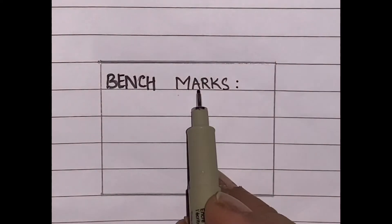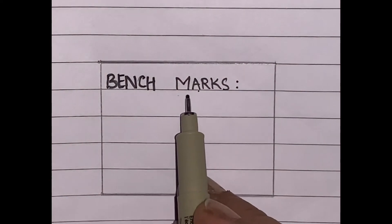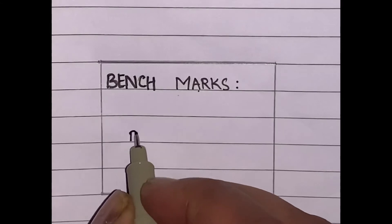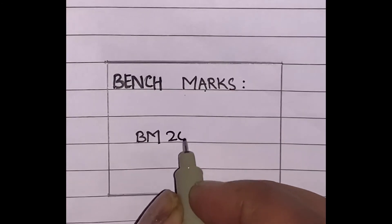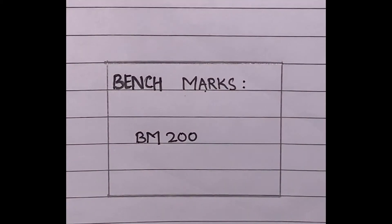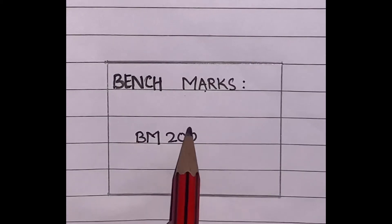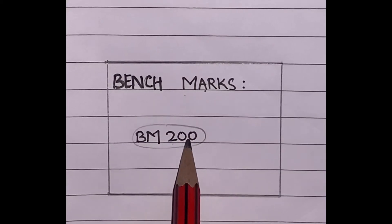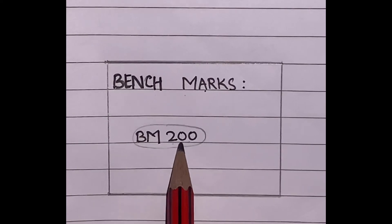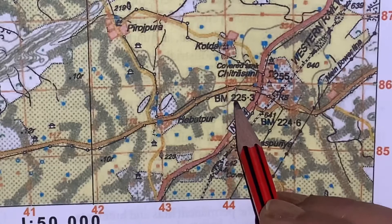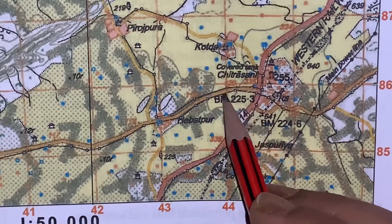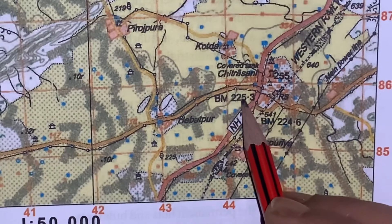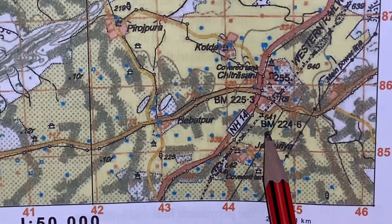The last method is benchmarks. These are permanent survey points and are written as capital B and capital M. For example, if the map shows BM 200, it means the benchmark height of that point above sea level, through accurate survey, is 200 meters. Another example in the map shows BM 225.3, meaning the height of that place is 225.3 meters above sea level.